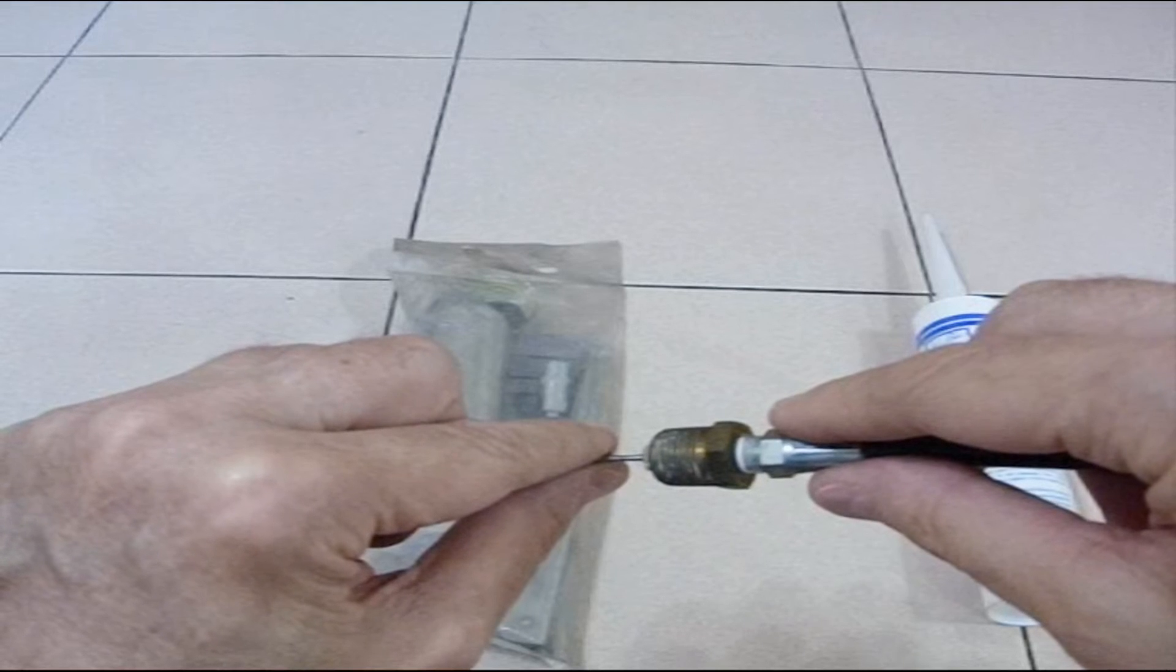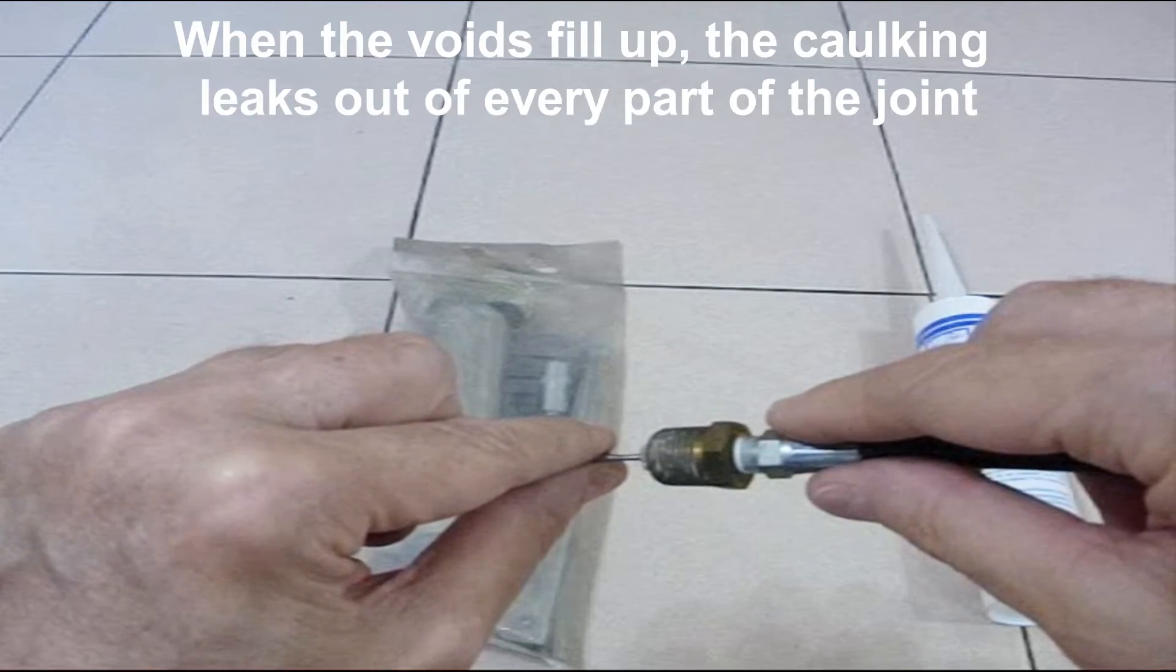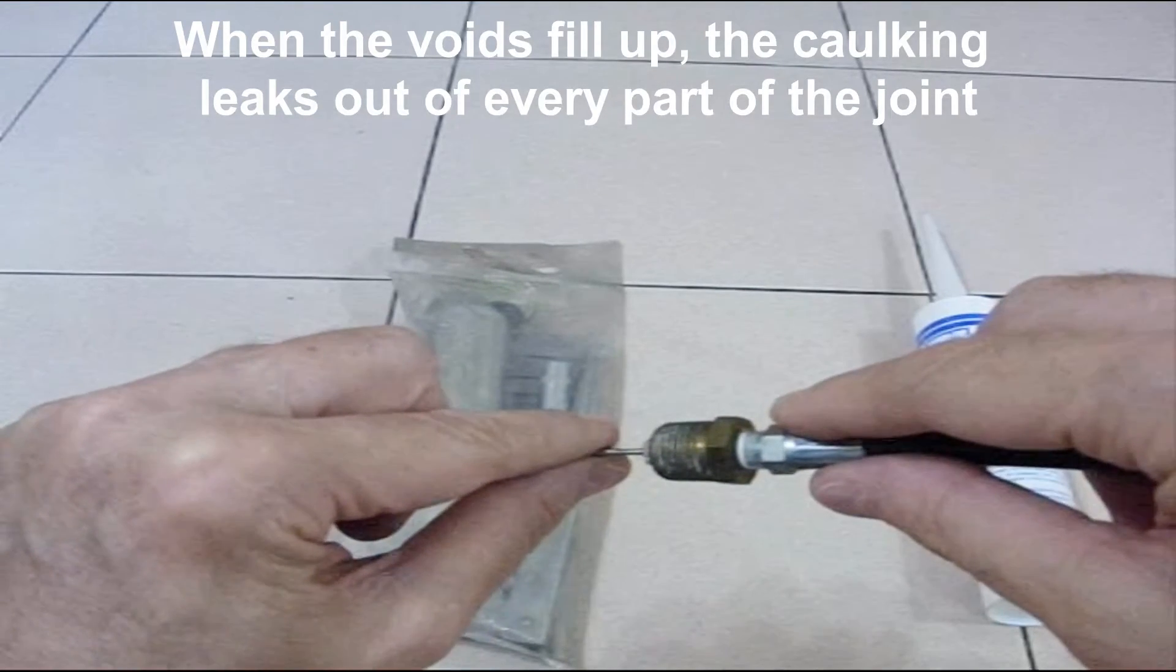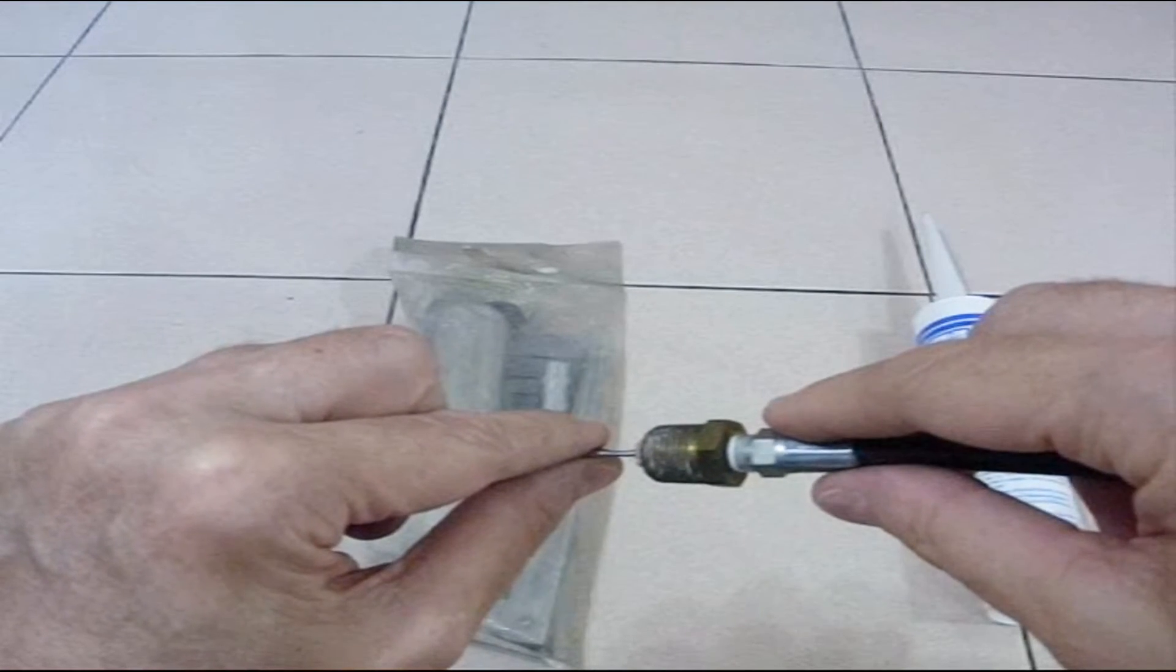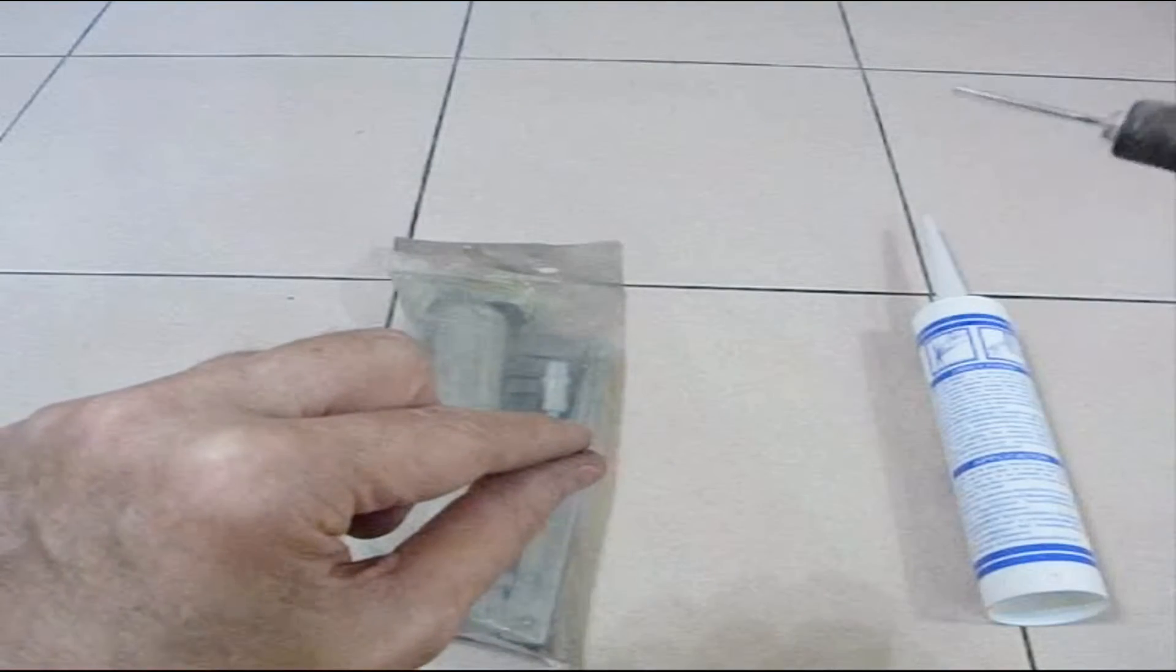Watch for the ribbons of caulking to start coming out of the cracks. When you think it has the void filled and the cracks are filled, you pull it out and go on to the next one.